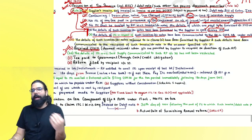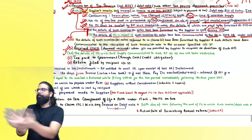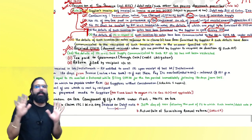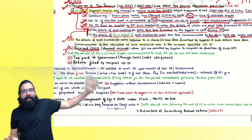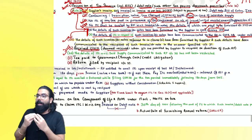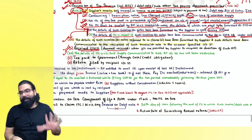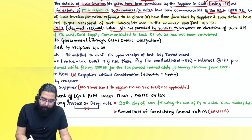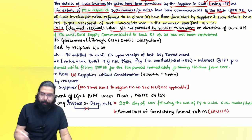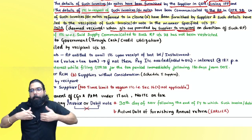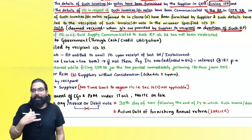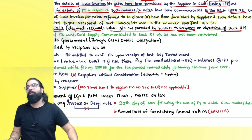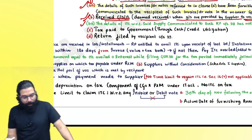Clause (b): you should have received the goods, services, or both. Deem received concept: if the supplier sends goods directly to your agent and the agent receives them, you can take the credit. Similarly, if supplier delivers goods directly to your customer on your direction, you can take the credit — either you receive it or someone on your behalf receives it.